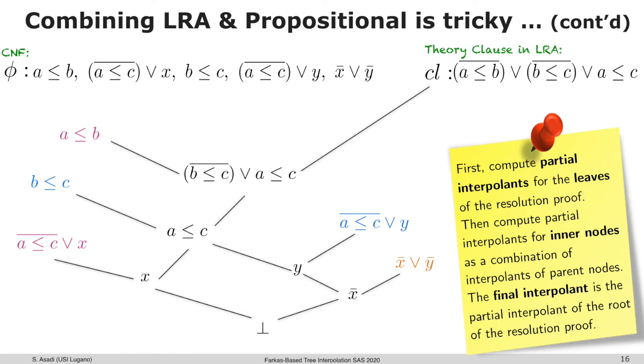Here is a CNF formula, and here is the theory clause which is required for the refutation of this CNF formula as shown here. The interpolation techniques follow recursive algorithms which initially set partial interpolants for some nodes in the refutation tree, and then based on the proof structure, we draw a final interpolant for the formula, which is the partial interpolant of the overall conclusion.